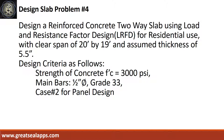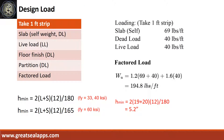Design a reinforced concrete two-way slab using load and resistance factor design for residential use with a clear span of 20 feet by 19 feet and assumed thickness of 5.5 inches. Design criteria: strength of concrete 3,000 PSI, main bars half-inch diameter grade 33, Case 2 panel design. The uniform load for 5.5-inch thick slab is 69 PSF, residential live load is 40 PSF, other dead load (floor finish and partition) is 40 PSF, for a total factored load of 194.8 PSF.